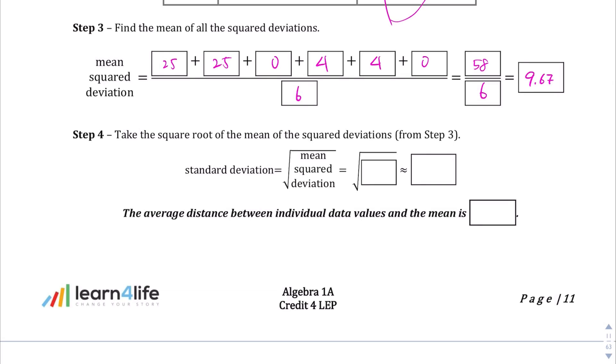And then, we need to take the square root of that. So, let's see. Square root of 9.67. Punch that into the calculator. You get about 3.1. So, we say that the standard deviation in this case is about 3.1.